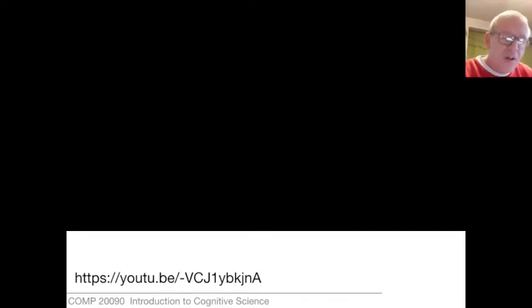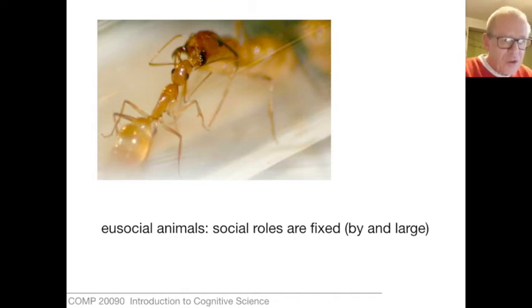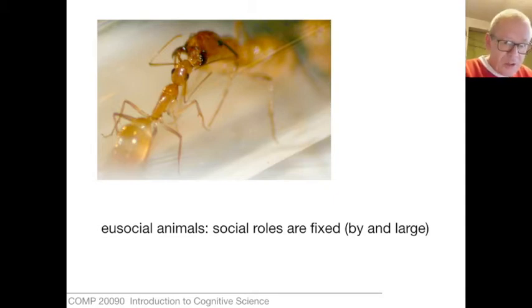We find it fairly easy to recognize now the hallmarks of culture in the cross-generational transmission of skills — for example, tools and technologies. We see this in primates. What if we go further afield? If we go right down to the level of the insect, we find a lot of animals have a form of social organization which is radically different from ours.